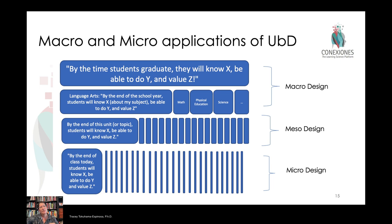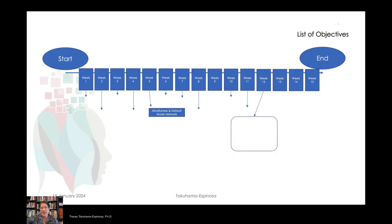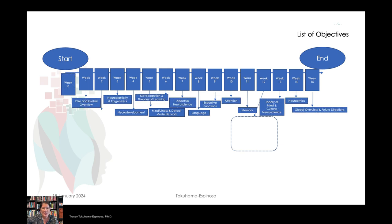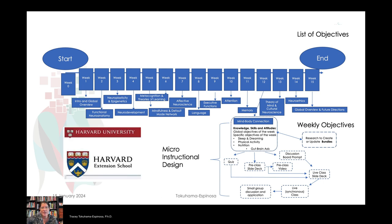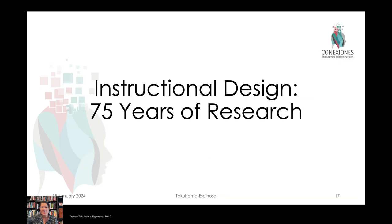The same structure — setting objectives, deciding how they'll be evaluated, and what activities or resources you need — can be done at macro, meso, and micro levels of planning. If you use this to set up an entire semester's worth of planning, you can backwards engineer yourself to your starting point. Decide the topics you want to cover and then how you will actually get there. If you have weekly objectives, how do you backwards engineer that to the activities of the day?